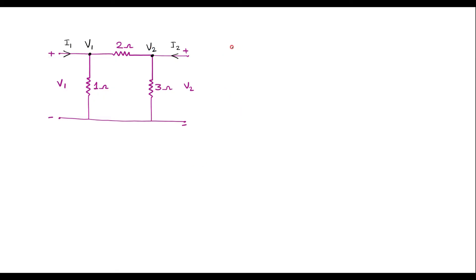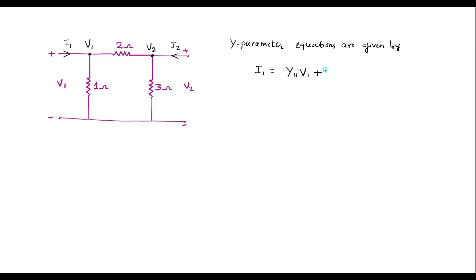We know that the y-parameter equations are given by: I1 is equal to y11·V1 plus y12·V2, and I2 is equal to y21·V1 plus y22·V2. Let me call the first equation 1 and the second equation 2.